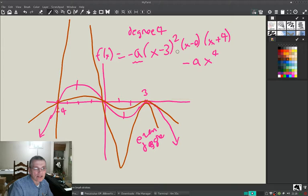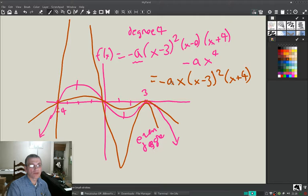The last part is we have to pick a point and that will fix our a. So let me write this again because I don't like having that x minus zero - it's kind of weird. I'm gonna write minus a x (x minus three) squared (x plus four).